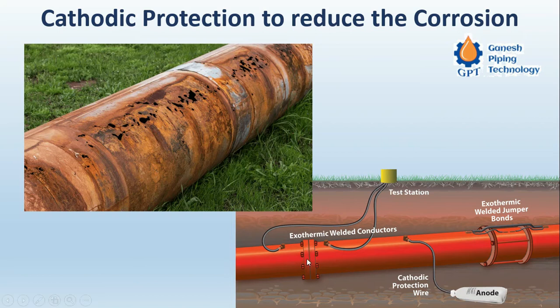For buried pipes or structures where two dissimilar pipes are connected — like pipe one and pipe two connected together, possibly with a metallic gasket — we recall from basic science that in an electrolytic cell there are two poles: anode and cathode. Current flows from anode to cathode, and the anode loses its material, which gets deposited on the cathode, causing the anode to shrink.